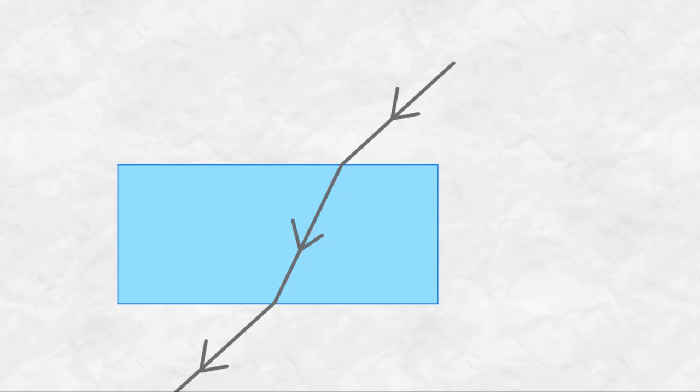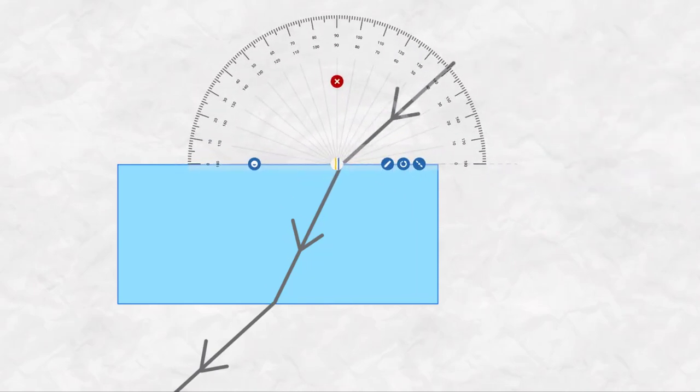Here we have a ray diagram of the light as it enters and leaves a glass block and refracts at both of the boundaries. We're going to measure the angle of incidence and the angle of refraction of the light as it enters the block. All of the angles are measured from a normal, just like in reflection.